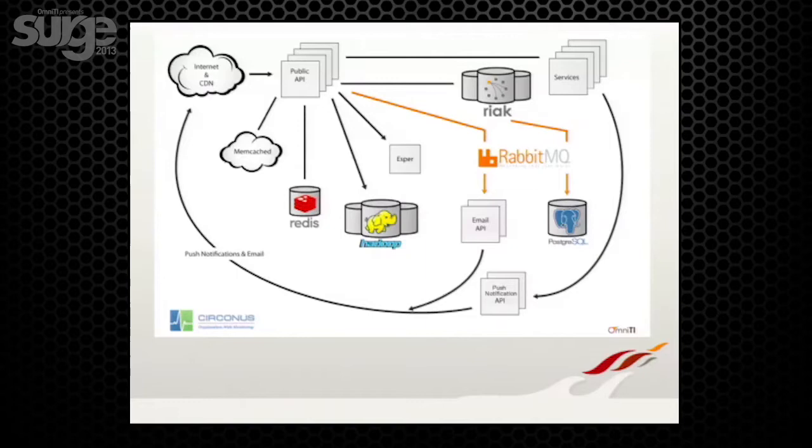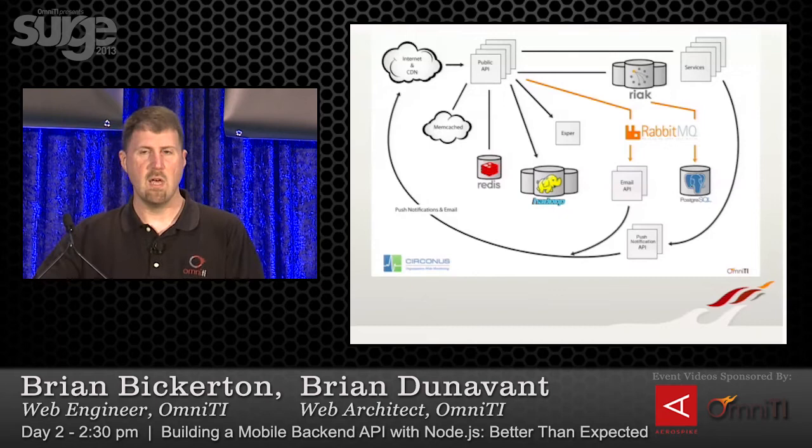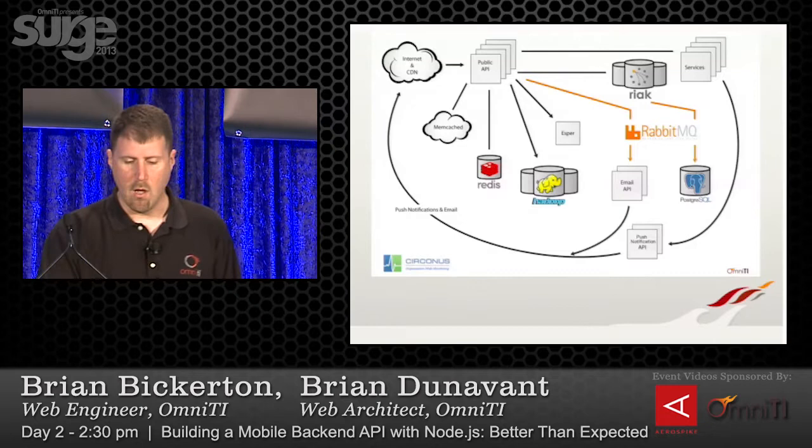Overall the architecture looks something like this: stuff comes in, hits the public API, which talks to caching servers, data warehouse, pulls stuff from Riak, takes care of all those services, pulls together a response, and returns it to the client. Data flow goes back out — emails, push notifications, whatever events were triggered. We still needed to decide what technology to use for that public API — something that would be the glue putting everything together, handle timeouts, handle a large volume of requests, fail very quickly, and have strong support for timing out backend services.